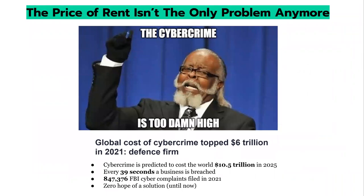If you really want to look at the financial impact, consider Jimmy McMillan whose whole campaign was built on the price of rent being too damn high. The price of cybercrime is even higher — an estimated $6 trillion cost to the global economy in 2021, with estimates of $10.5 trillion by 2025. About every 39 seconds, a business is breached. In 2021 there were roughly 847,000 cyber complaints filed with the FBI. Up until now it wasn't solved, but I hope to provide a solution here today.